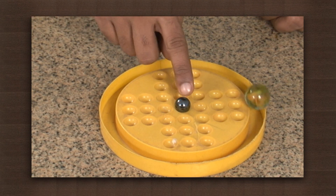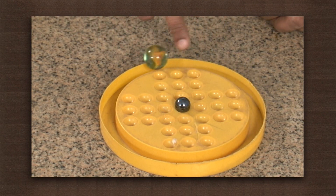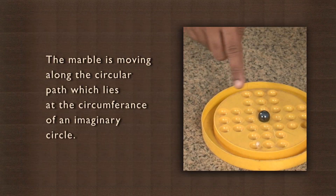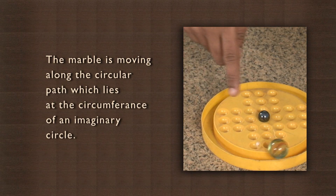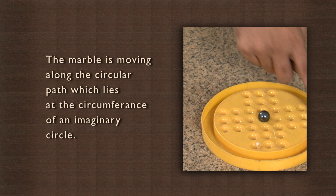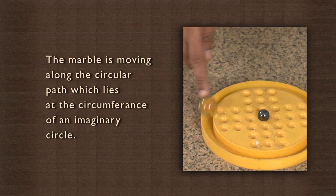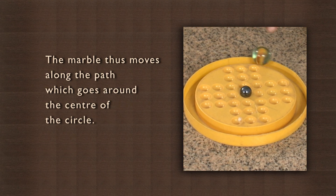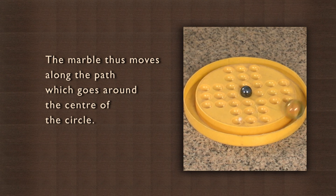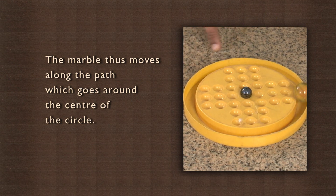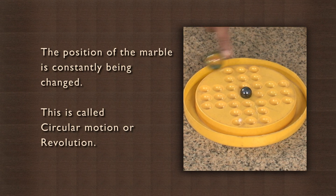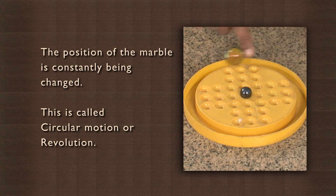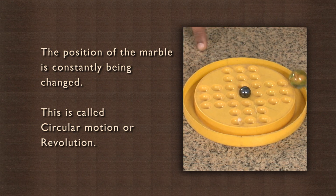How are these two motions different? The marble is moving along a circular path which lies at the circumference of an imaginary circle. The marble thus moves along a path which goes around the center of the circle. The position of the marble is constantly being changed. This is called circular motion or revolution.